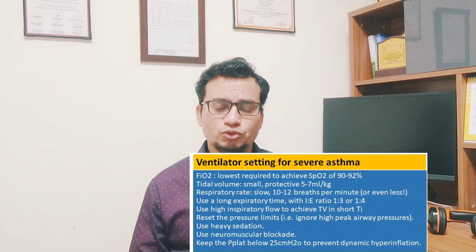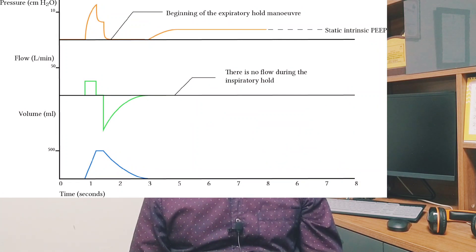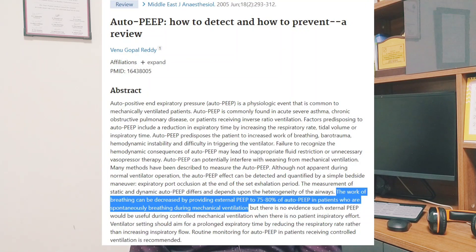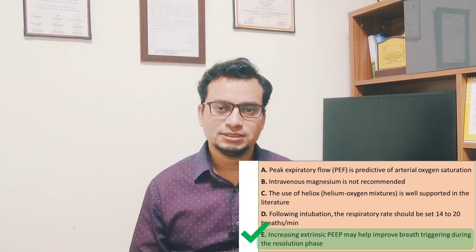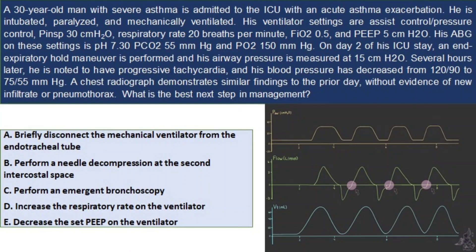Intrinsic PEEP can be measured during an expiratory pause — the expiratory hold maneuver — while the patient is deeply sedated or completely paralyzed. Setting extrinsic PEEP up to 80% of the intrinsic PEEP can reduce the inspiratory effort required to trigger the ventilator without substantially increasing the risk of barotrauma. However, this strategy is most useful during the ventilator weaning phase when the patient is conscious and about to trigger ventilatory breaths.